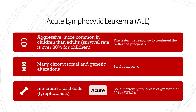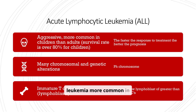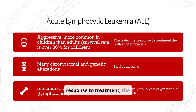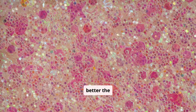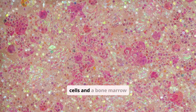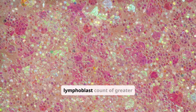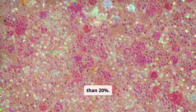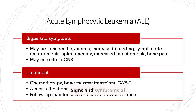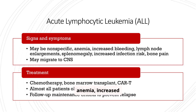Acute lymphocytic leukemia, or ALL, is an aggressive leukemia more common in children. The faster the response to treatment, the better the prognosis. ALL involves immature T or B cells and a bone marrow lymphoblast count of greater than 20%. Signs and symptoms can be nonspecific, but may include anemia, increased bleeding, lymph node enlargement, and bone pain.